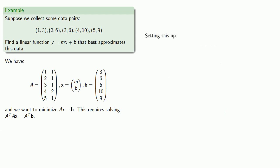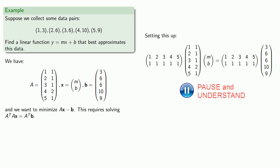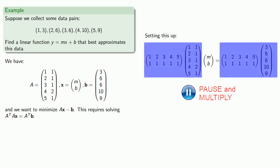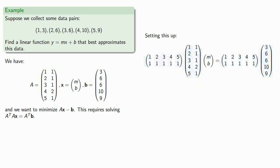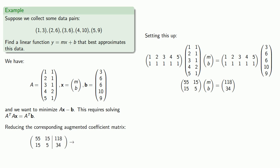So setting this up, we want A^T Ax to be A^T b. And cleaning up all those matrix calculations. And now this is a beautiful system of two equations in two unknowns. And so reducing the corresponding augmented coefficient matrix gives us...